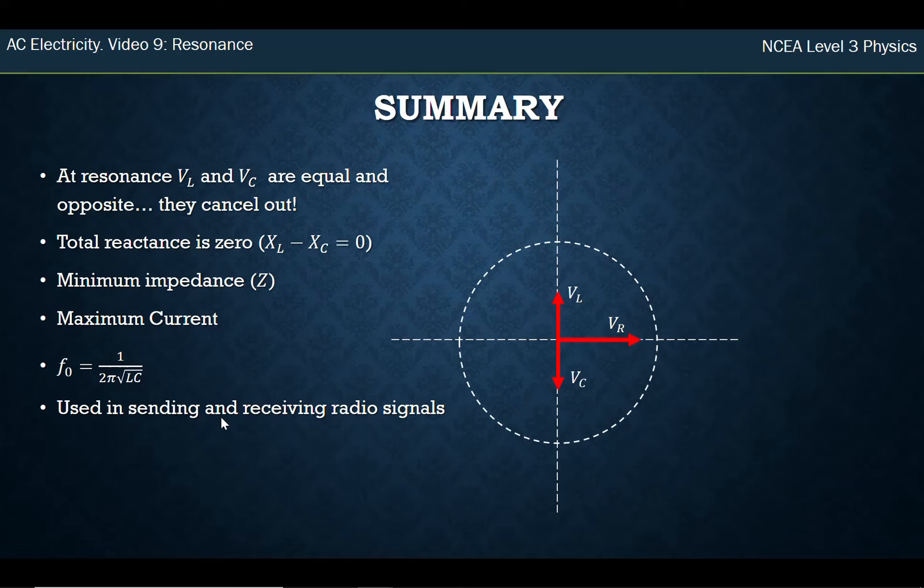So in an LCR circuit with a light bulb, the light goes bright. In an LCR circuit with a speaker, we hear the sound of the radio station we want to hear. There's a formula for that, which is given. And obviously, it's used in these radio signals.